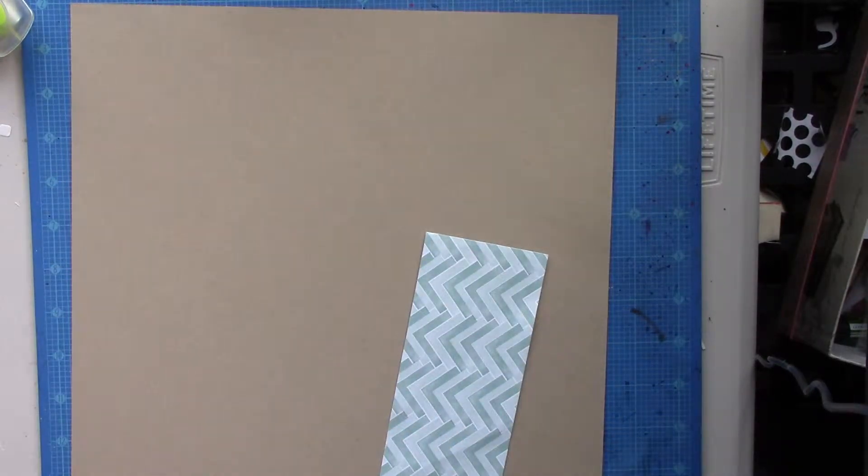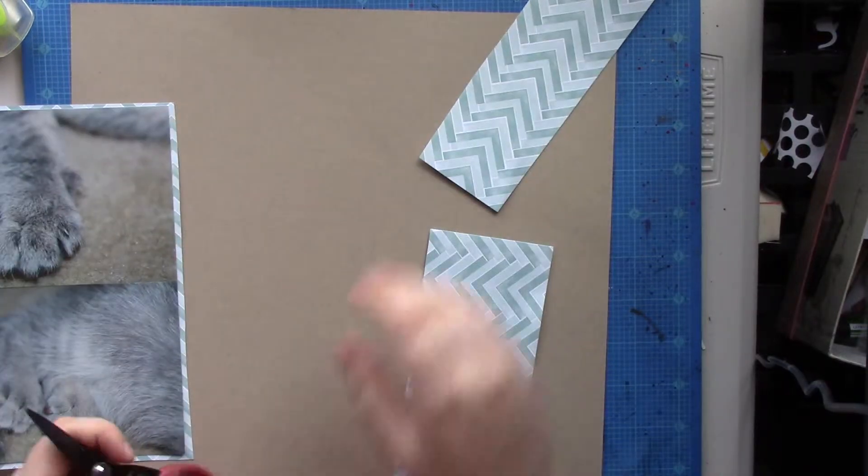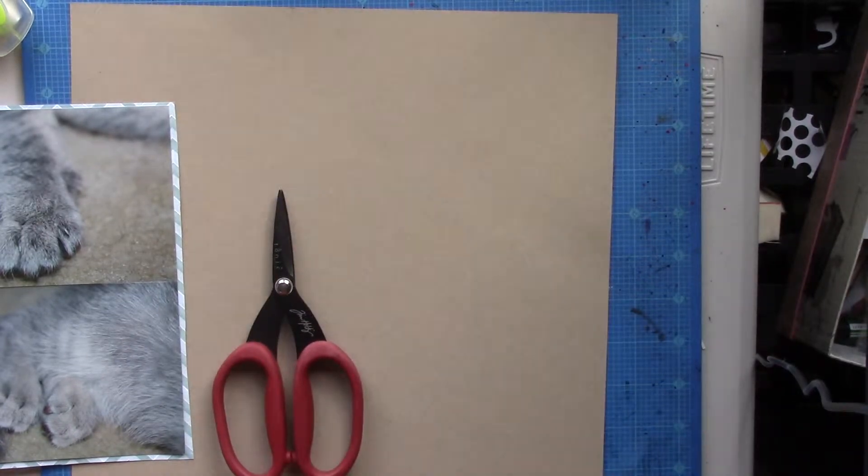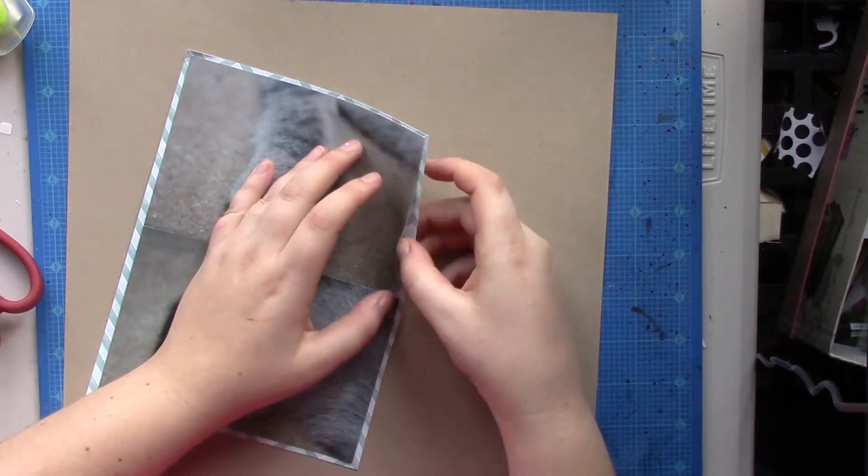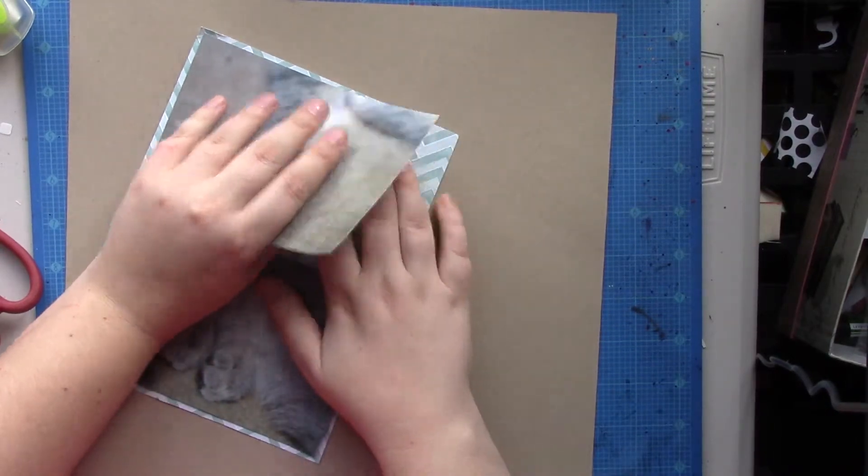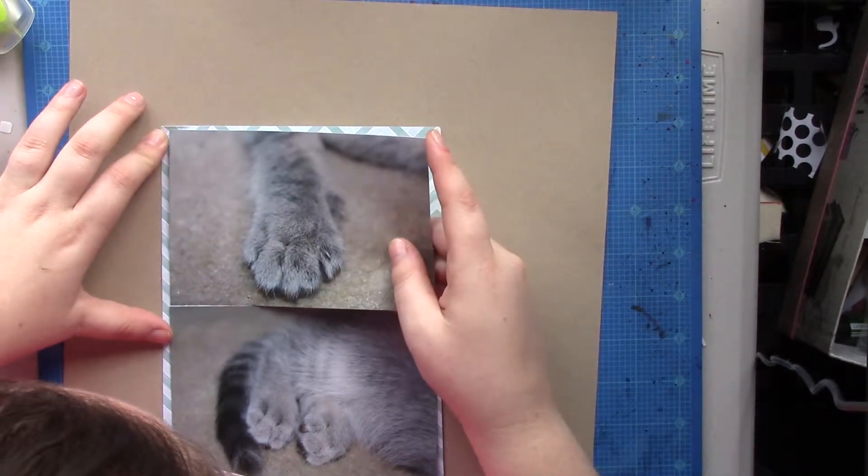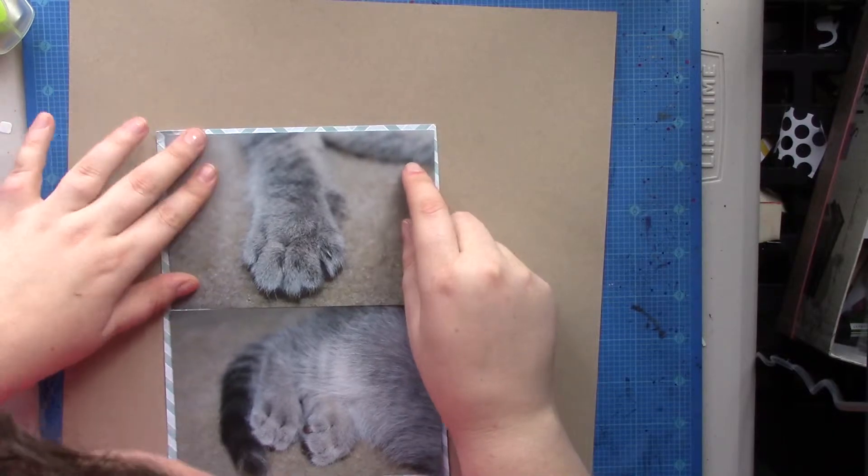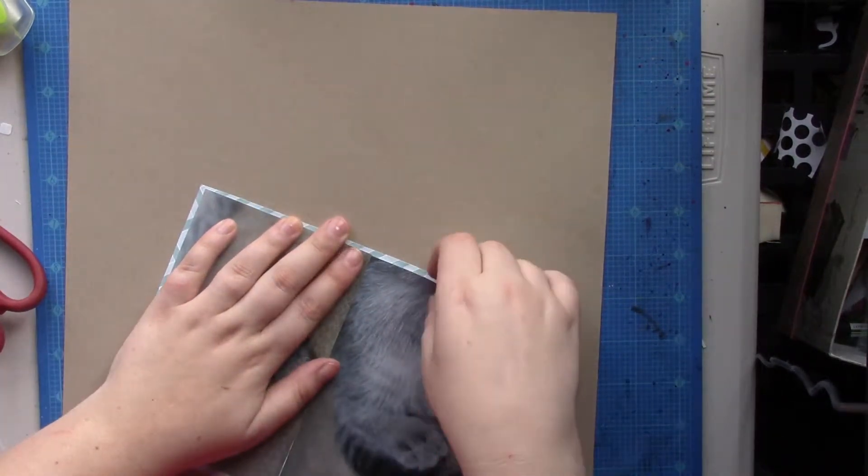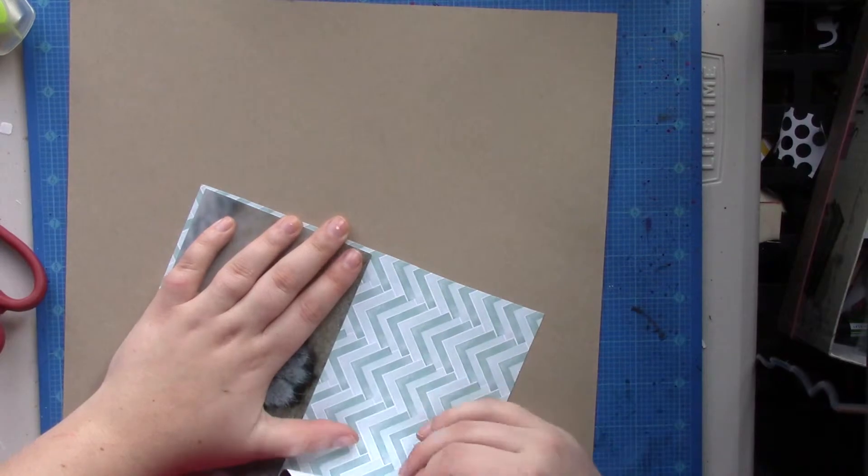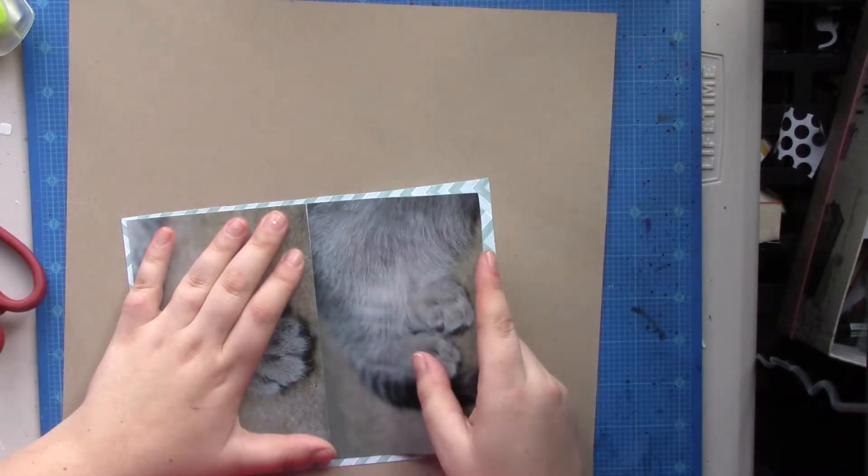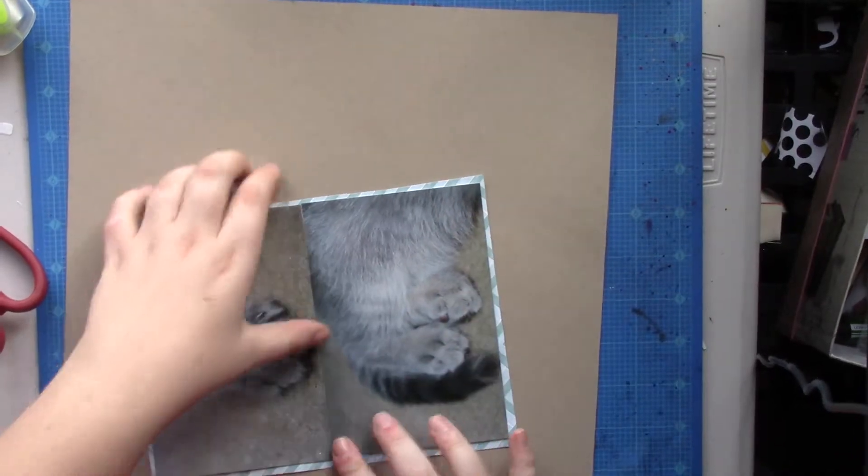So I'm using a piece of 8.5x11 paper from a package of paper that I got at Michaels, which is an Amy Tangerine collection. So I'm going to put this on straight this time, hopefully. I really don't like this photo paper from Walmart. Like, their new, whatever they're printing their photos with now, it's really, really thin and I don't care for it.